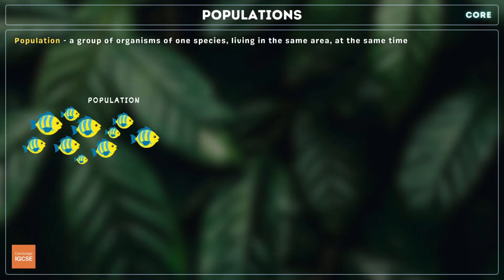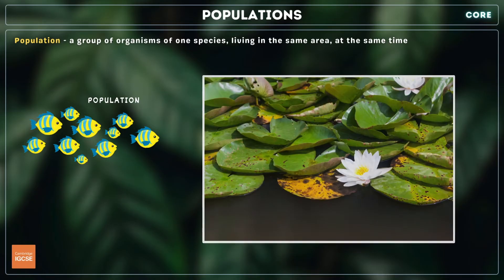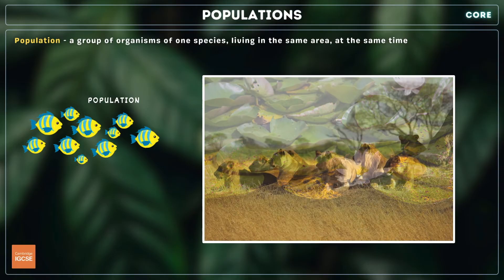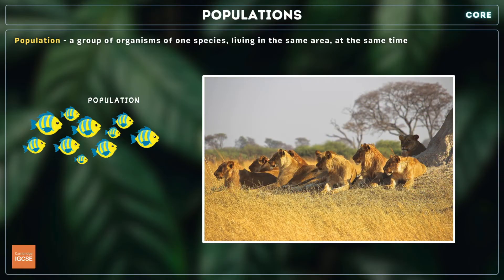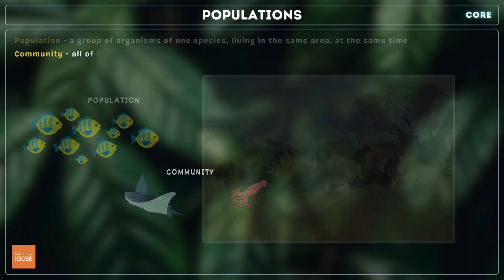A population is a group of organisms of one species living in the same area at the same time. For example, we might refer to a population of water lilies in a pond, or a population of lions in a national park.